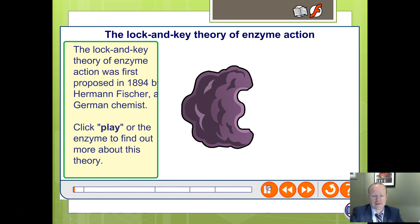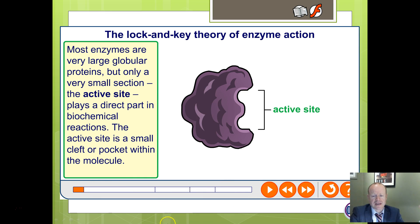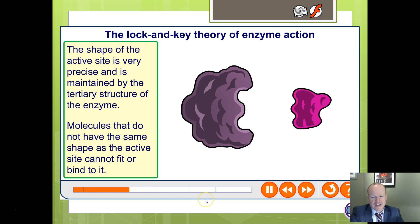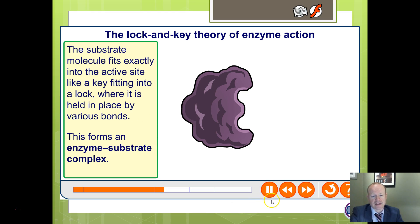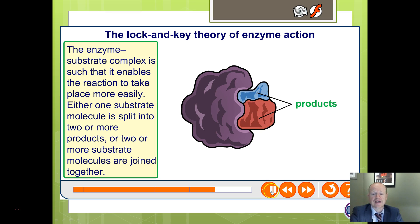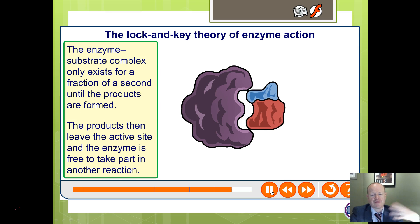Looking at that in more detail: the active site is a small part of the overall enzyme structure — just a 6 to 10 amino acid sequence — while most of the enzyme provides the three-dimensional shape. It needs to be specific: only the right-shaped enzyme and substrate fit together. When the right-shaped substrate comes along, it forms an enzyme-substrate complex, binding them together so the reaction can take place more easily and new products are made. Remember, the enzyme doesn't get used up — it's then free to take part in the reaction again.